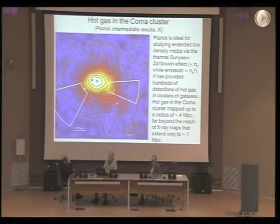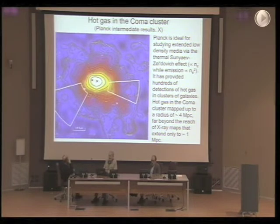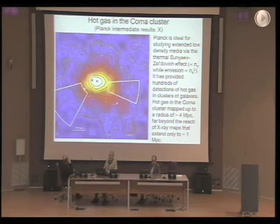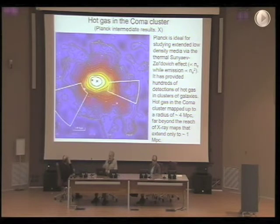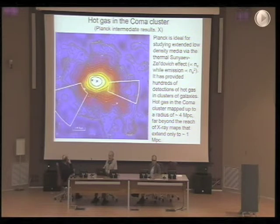The example I am showing here is an observation of the Coma cluster, one of the most famous objects in the sky. We have a comparison between the emission in X-rays — the red to white part of the figure — with the emission in the Sunyaev-Zel'dovich effect made by Planck, shown as contour levels. What was found is that the hot gas in the Coma cluster was mapped in the SZ effect up to radii about four times larger than the region mapped in X-rays, meaning Planck can see hot gas over an area about 20 times larger than detectable in X-rays.